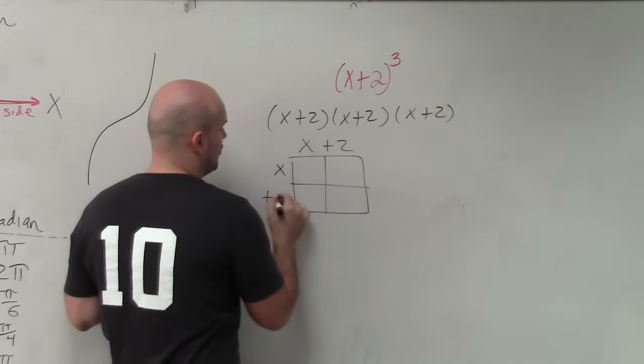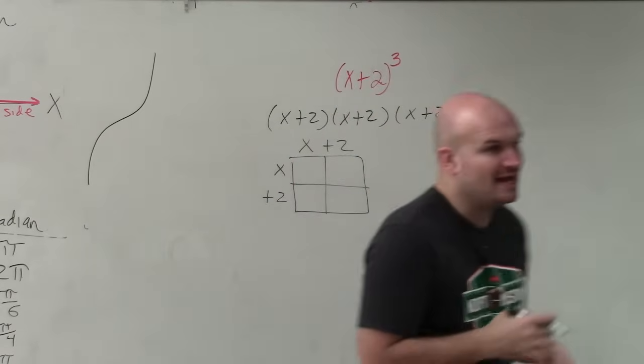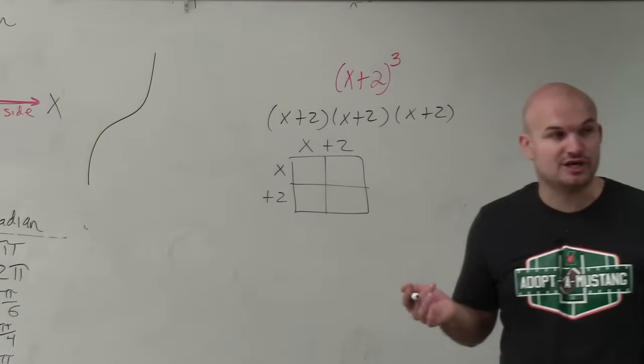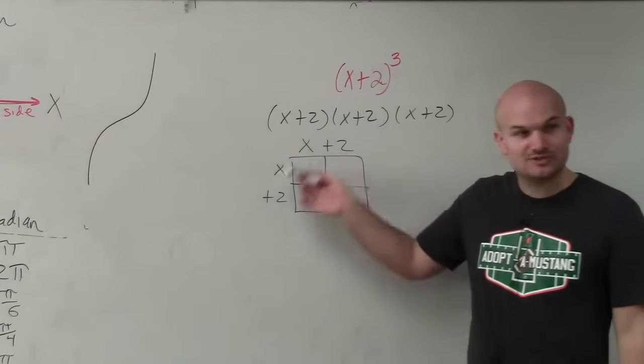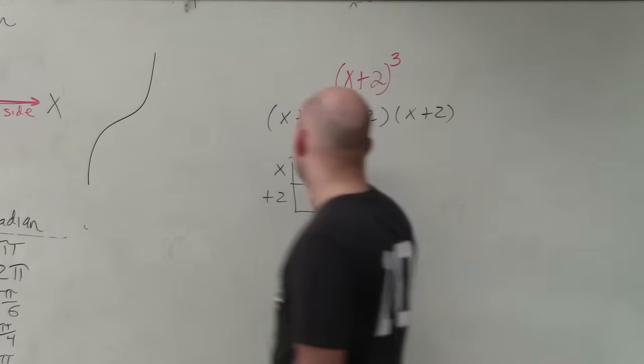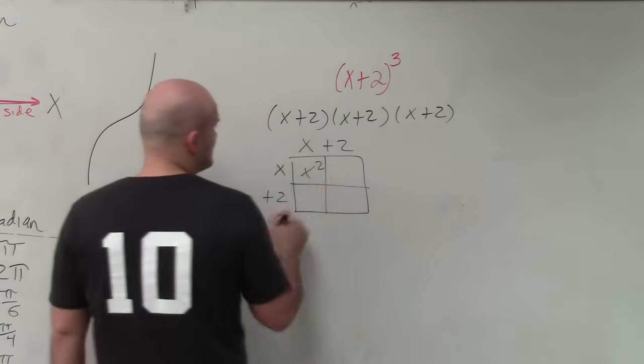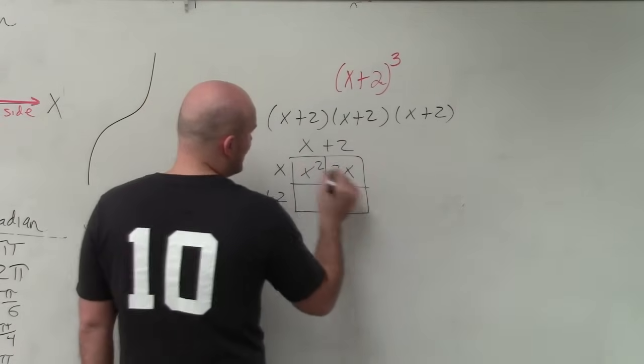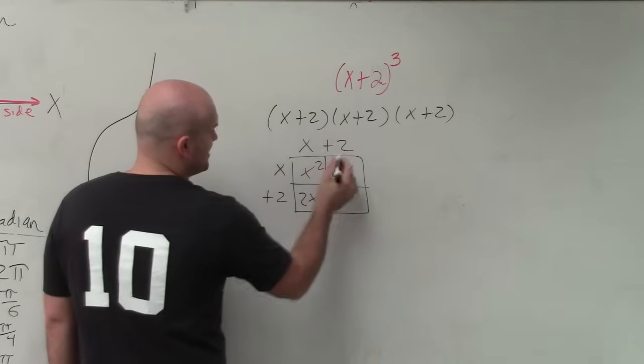It really helps you organize everything and make sure you check your work. Because now, if you do x plus 2 times x plus 2, you're just finding the area of each box. And so therefore, x times x is x squared, x times 2 is 2x, x times 2 is 2x, 2 times 2 is 4.